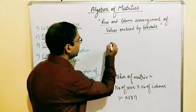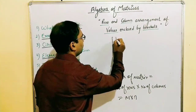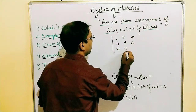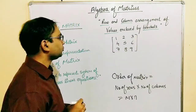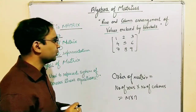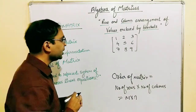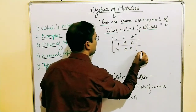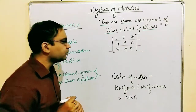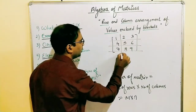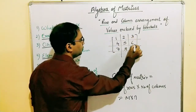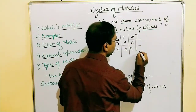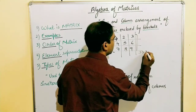Let's say if we have a matrix with these values. What will be the order? Let's count the rows: row number one, row number two, and row number three — three rows. And columns: column one, column two, column three — three columns. So the order of this matrix will be 3 × 3.